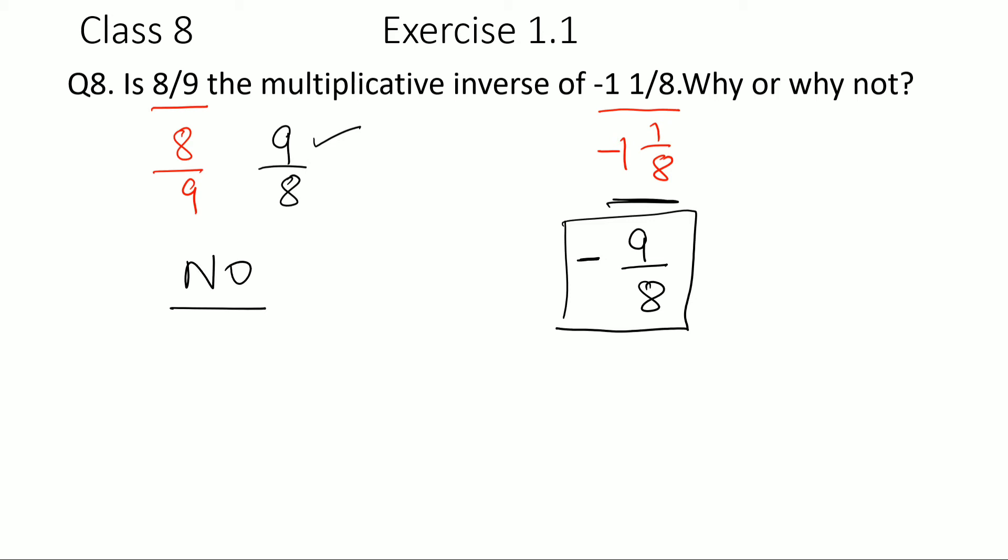And why? Because when I multiply 8/9 and -9/8, so I am multiplying this number and this number -9/8, 8 gets cancelled out, 9 and 9, and I am getting -1.